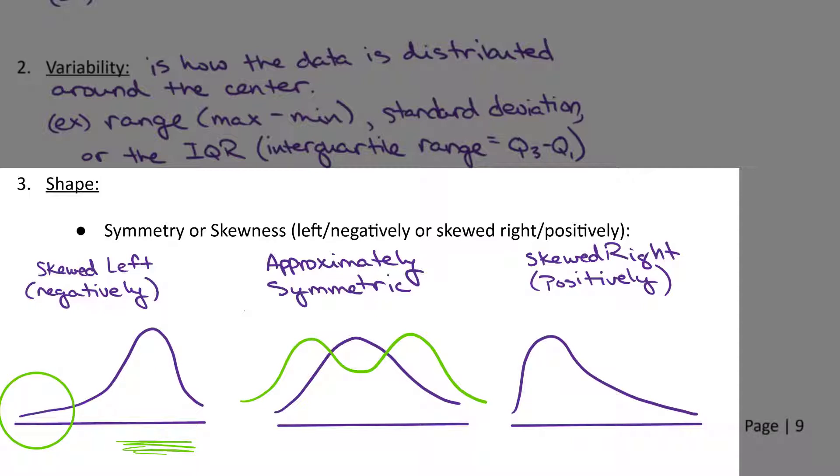And then, similarly, you're skewed right. You can see over here, the extreme values are being pulled to the right. That's where your tail is getting pulled.